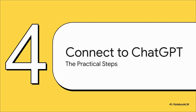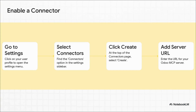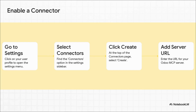I know what you're probably thinking right now — this sounds incredible, but how do I actually do it? Let's walk through the actual practical steps for connecting your Odoo system to ChatGPT. The process inside ChatGPT is surprisingly simple. You're just going to head into your settings, find the menu for connectors, and then click create. From there, all you have to do is paste in the URL for your Odoo MCP server, and that's it — the bridge is officially built. Quick heads up though: this custom connector feature is still in beta, so its availability might depend on which ChatGPT plan you have, and it might not be rolled out to everybody just yet.